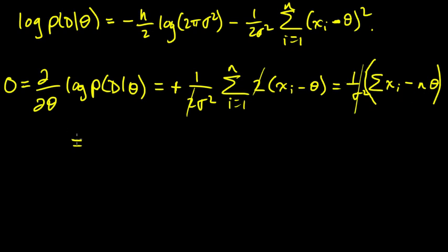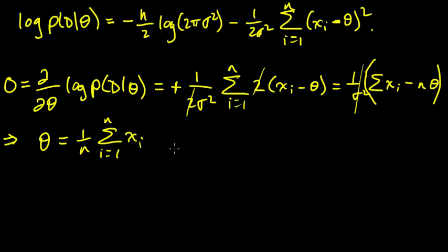Moving n theta to the other side and solving for theta gives us: theta equals 1 over n times the sum from i equals 1 to n of xi. We know this is a critical point where the derivative equals zero. To verify it's a maximum we take the second derivative of the log-likelihood with respect to theta.